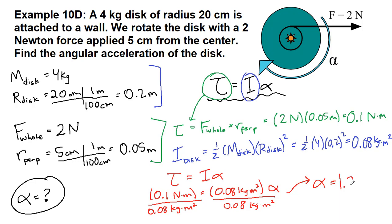But this gives us 1.25 radians—those appear magically—over seconds squared. That's what's left when we cancel everything else out. And that is our final answer: 1.25 radians per second squared for the angular acceleration of this disk.